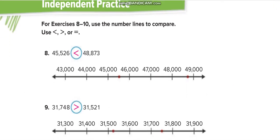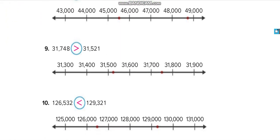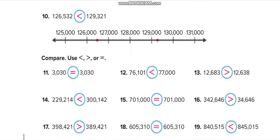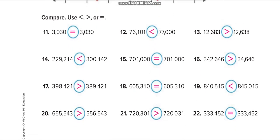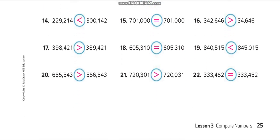Here, you guys should try to compare these numbers by yourself first, then match your answers from this video to check yourself. For example, thirty-one and thirty-one — then seven is greater than five, so that one is greater. All of these questions you should solve independently first, then verify with the video.